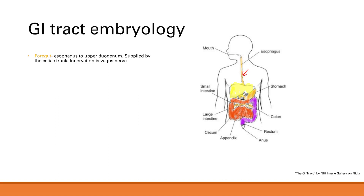The blood supply for the foregut is the celiac trunk, and the innervation is the vagus nerve. So the celiac trunk supplies everything from the esophagus all the way to the upper duodenum, and the vagus nerve provides innervation. That is important to know.